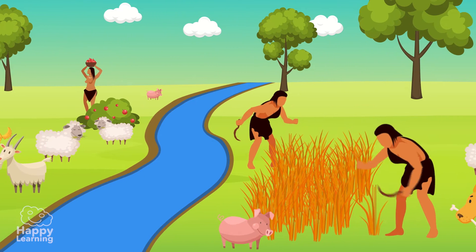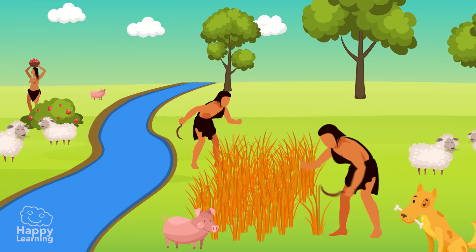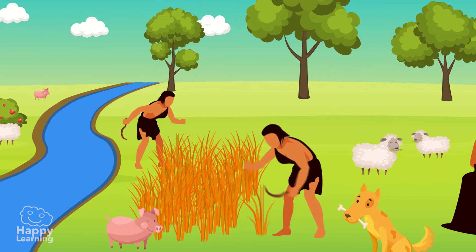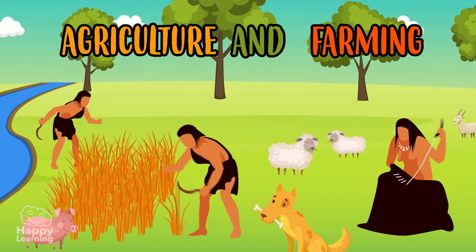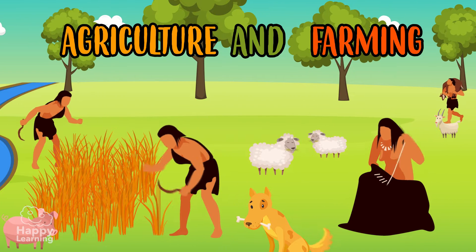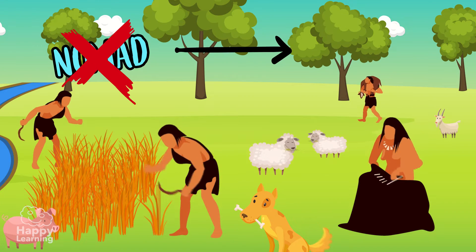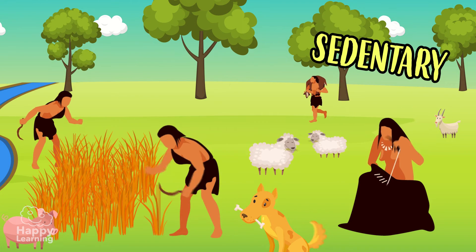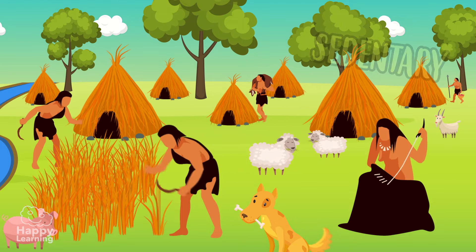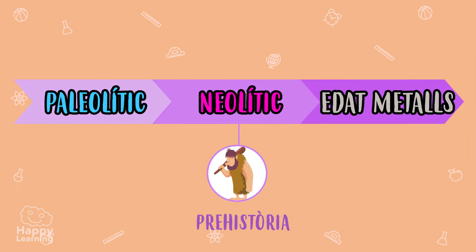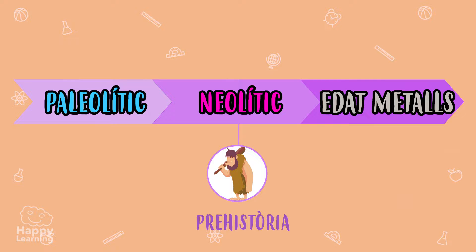They also began to cultivate plants which were then eaten. With the arrival of agriculture and farming, everything changed. Man stopped being a nomad and became sedentary, and the first villages were made. This is when the Paleolithic period ends and the Neolithic begins.